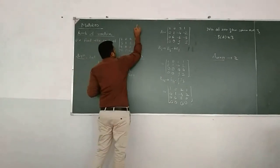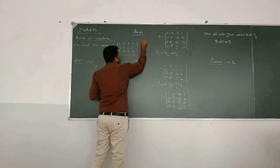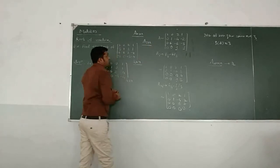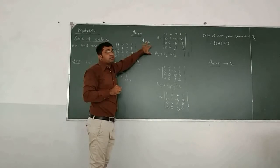Suppose we are having a matrix of the order m cross n, or for example, I take a matrix of the order 3 by 2. Rank will not exceed the lowest number. What is the lowest number? It is 2.